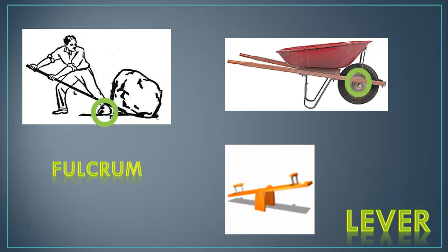In a wheelbarrow, it's the point where the wheel is connected. And in the seesaw, it's the point at which the seesaw moves. It wobbles on the fulcrum. Again, we're increasing the distance so that we can reduce the amount of force required to move an object.